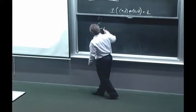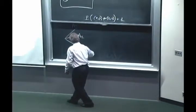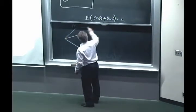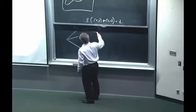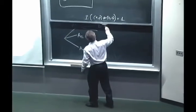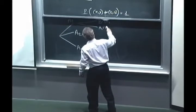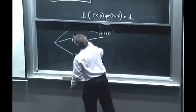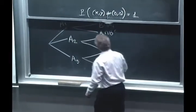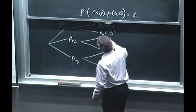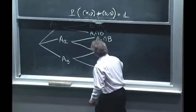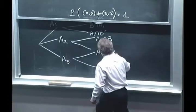We have three possible scenarios, A1, A2, A3. And under each scenario, B may happen or B may not happen, and so on. So here we have A2 intersection B, and here we have A3 intersection B.